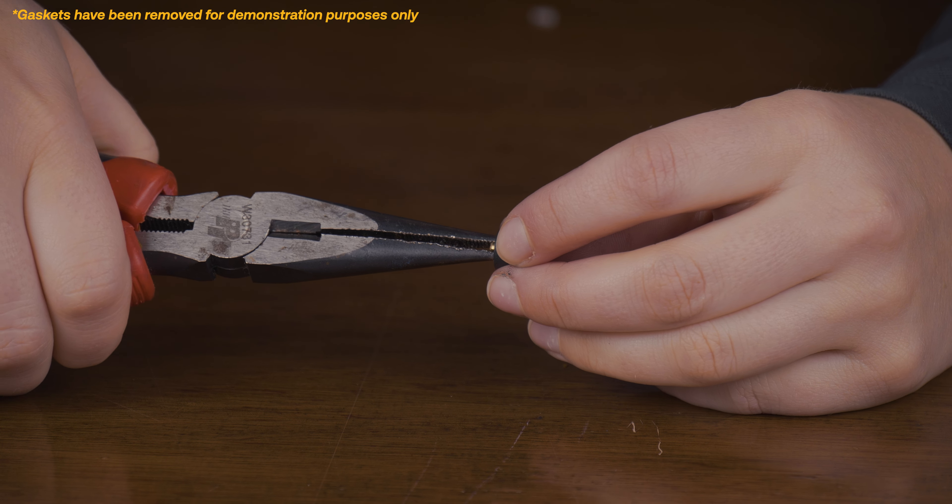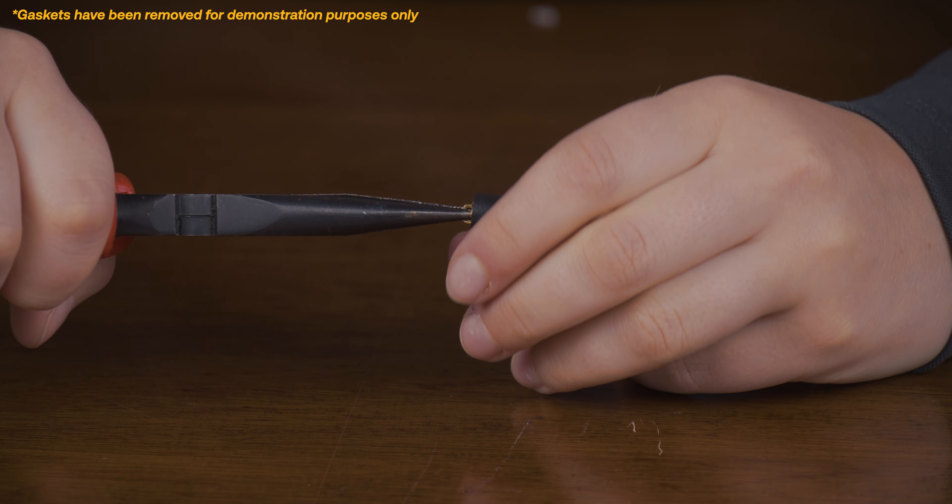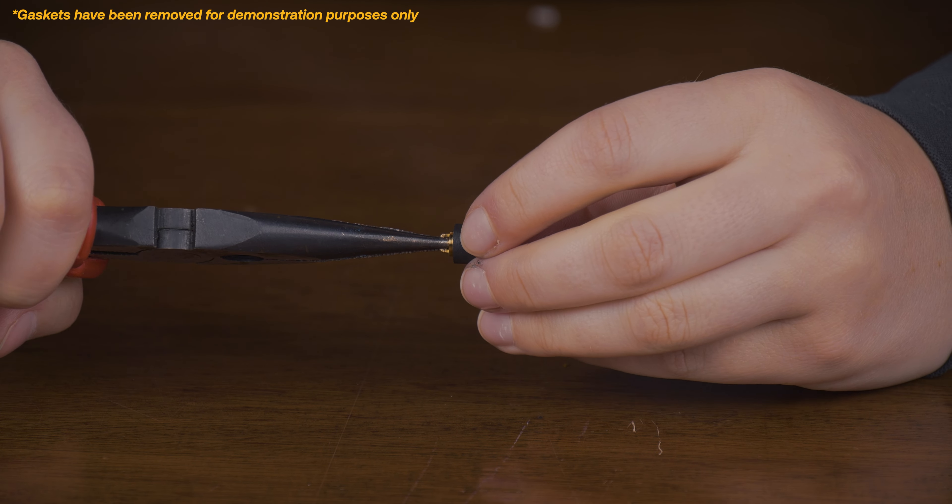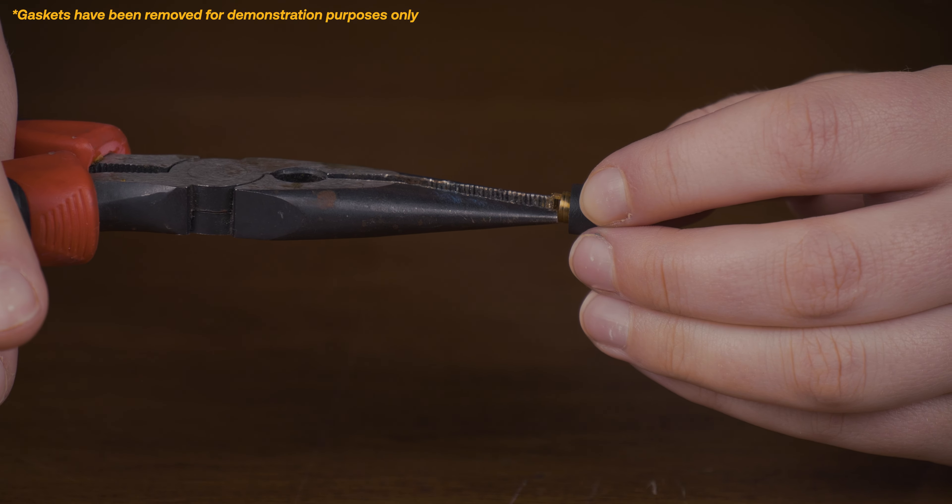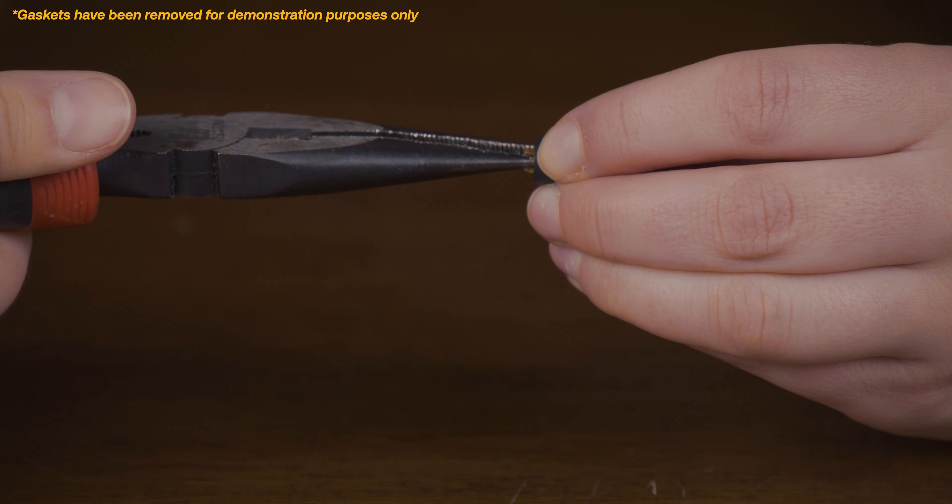Use a pair of needle nose pliers to turn the depressor counterclockwise to set it further out of the gasket. Turn the depressor clockwise to set it deeper in the gasket.